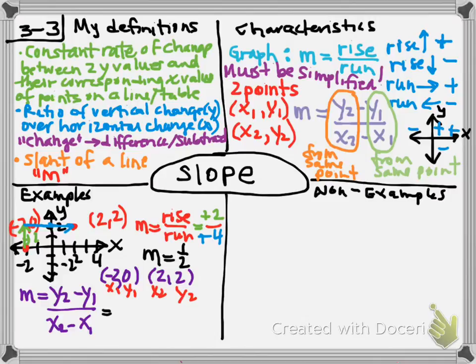So y2 is 2, and then the formula says minus, and then y1 is 0, divided by x2 is 2, the formula says minus, and then the x1 is a negative 2. You have to start with the subtraction sign, because that's what the formula says. Then you put the sign that attaches to the number. Now in the top, 2 take away 0 is 2. In the bottom, I have 2 take away a negative 2, so I can add the opposite. And 2 plus 2 gives me 4.